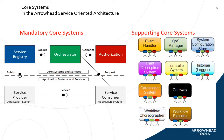The mandatory core systems of Arrowhead include the service registry, where service providers register themselves; the orchestrator, where service consumers ask for orchestration and matchmaking for a given service provider; and the authorization and other security features related core system. These are mandatory for each local cloud, and various application systems — as service providers, consumers, or both — belong to this local cloud. The services are late-bound, loosely coupled, and the lookup feature of the orchestrator provides the service-oriented architecture.